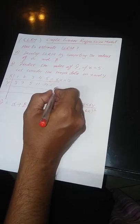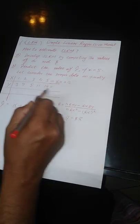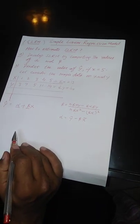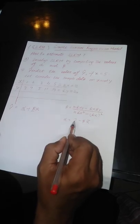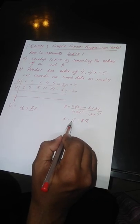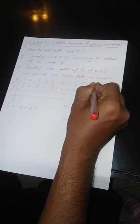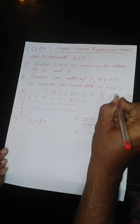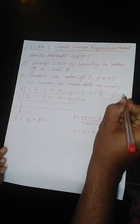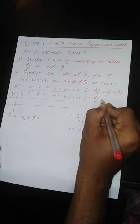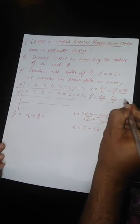And summation y is equal to 40. We also need the mean values of x and y, that is x̄ and ȳ. x̄ is equal to summation x over n. n is the number of values, which is 5. So x̄ = 15 over 5 = 3. And ȳ = summation y over n = 40 over 5 = 8.